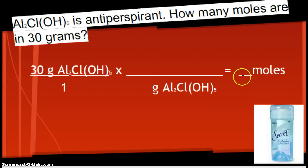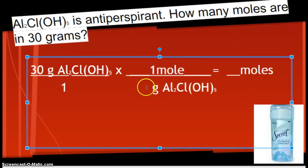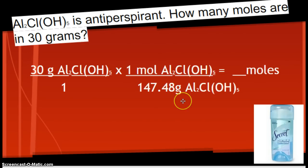Alright. And, then I want to find moles. Okay. So, you should have all this set up every time. If you're having a hard time with this setup, that's okay. Come see me so I can help you. Alright. So, I'm converting to moles. And, 1 mole is the same as how many grams. You've got to look on your periodic table. How much is aluminum? How much is chlorine? How much is oxygen? Hydrogen? And, then you should come up with 147.48.